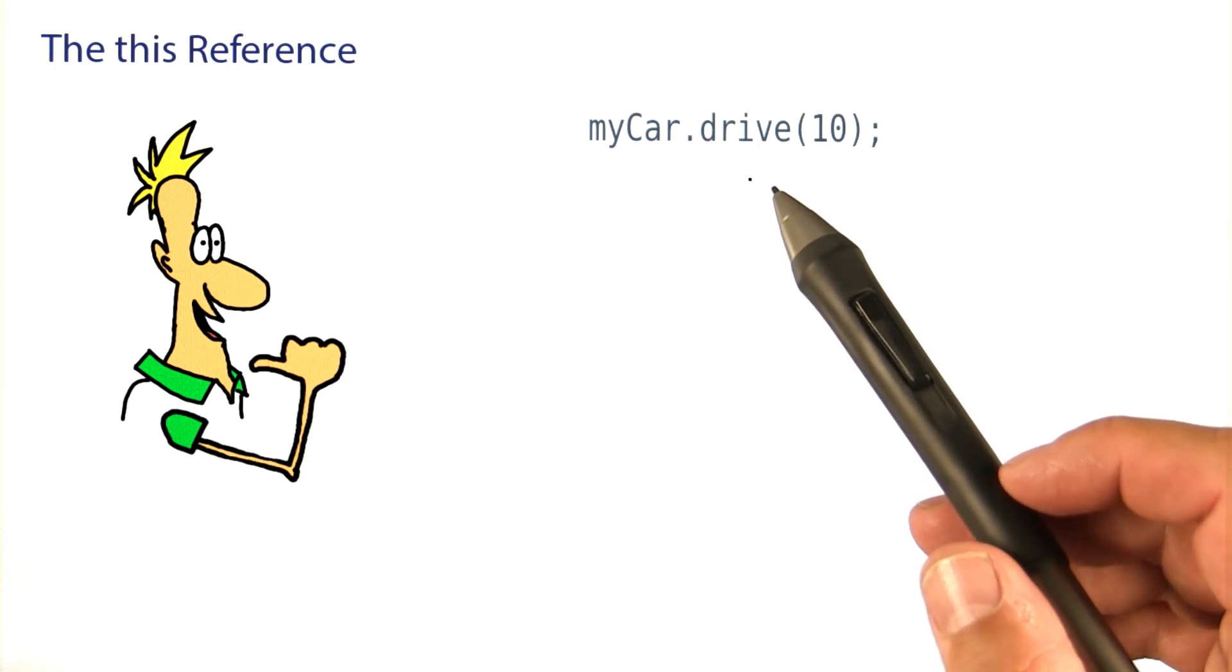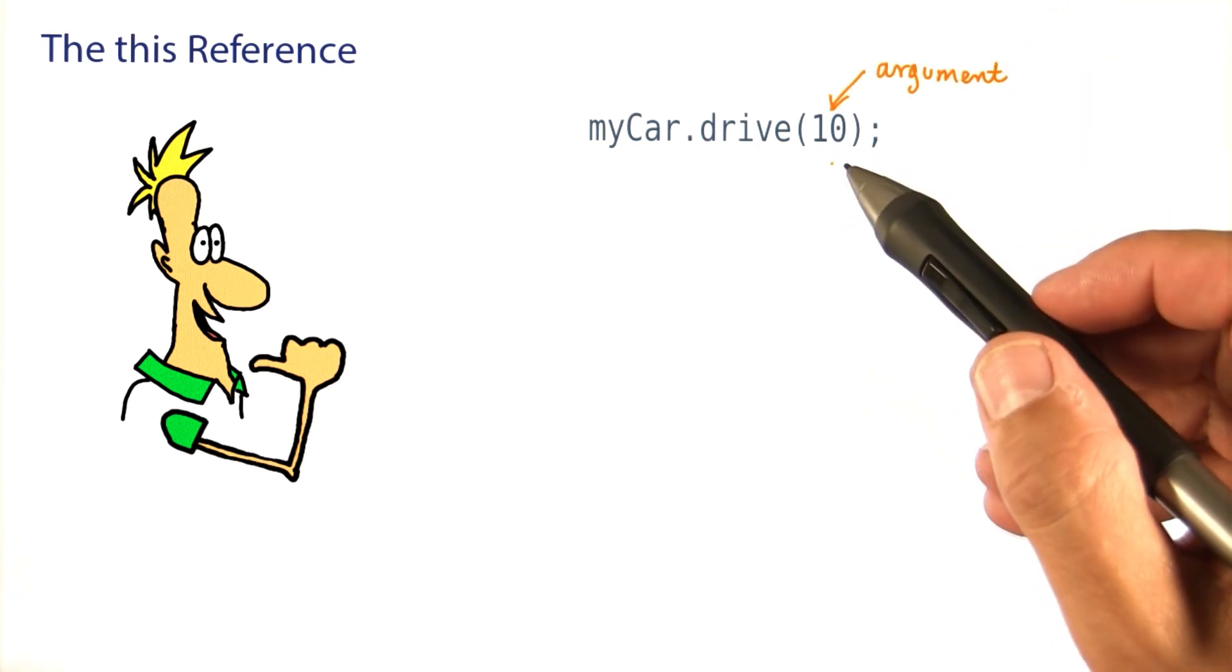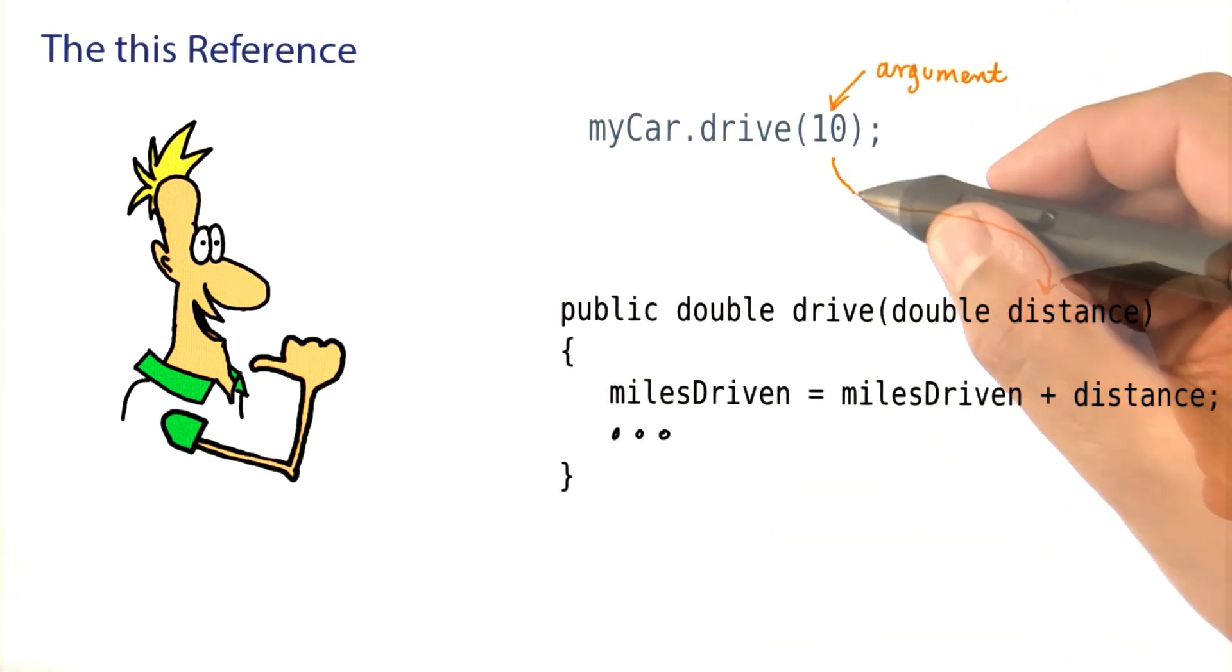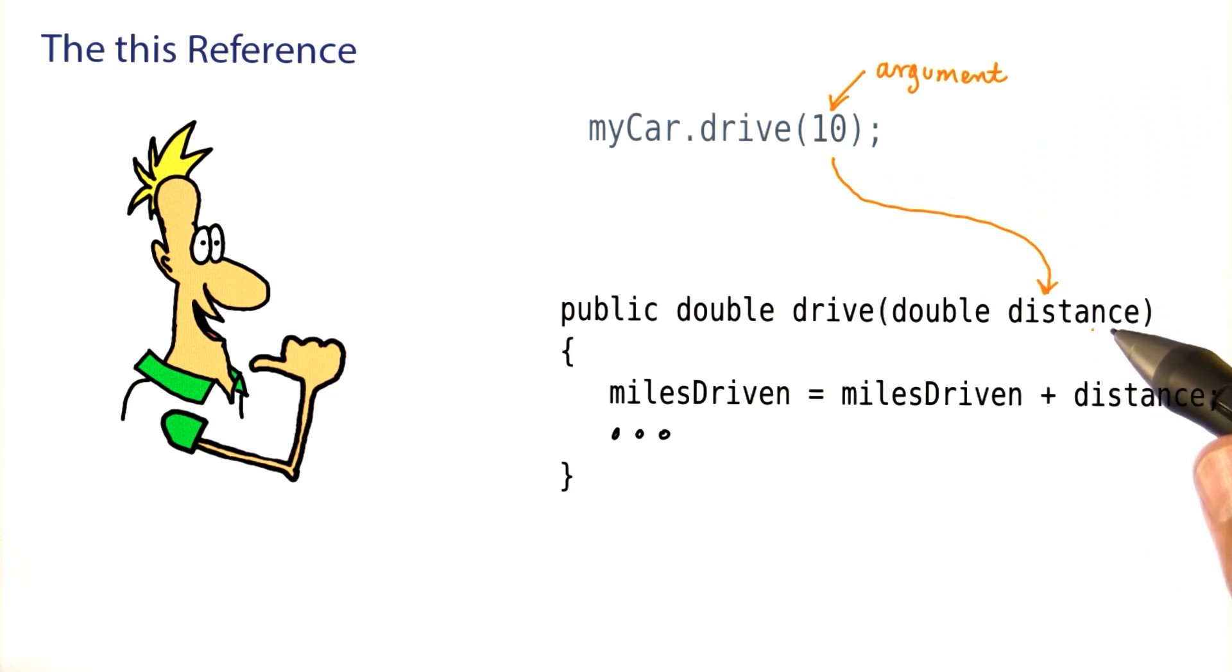Here's what I mean. Look at this method call. It has an argument, namely 10, and that argument gets copied into this parameter variable. So now distance is 10, and whenever you use distance, that means 10.